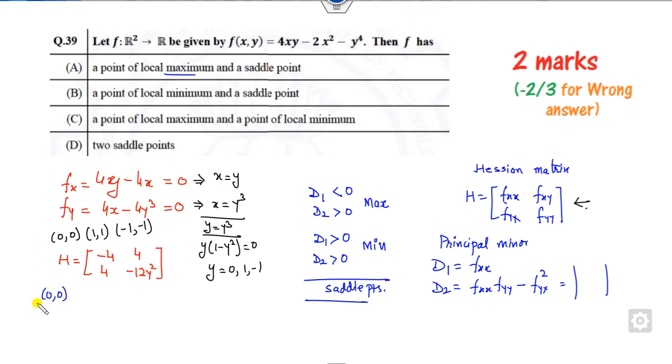We will check firstly for (0,0). The first principal minor is minus 4, which is less than 0. What is the second principal minor? When it's 0, this value will be 0. The determinant is 0 minus 16. So both are less than 0, meaning neither case is satisfied. So (0,0) is my saddle point. This option will cancel out.